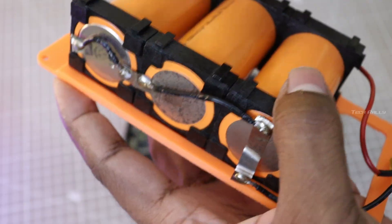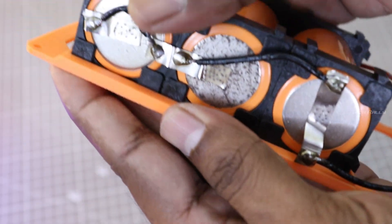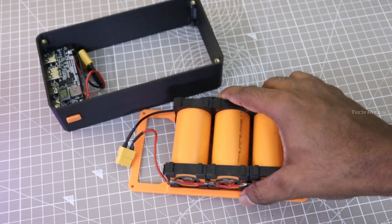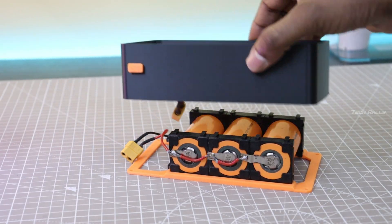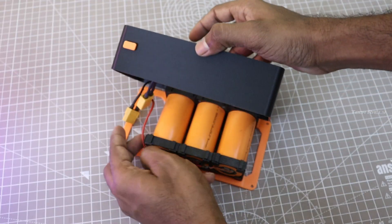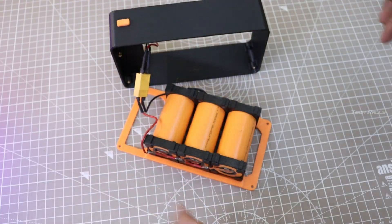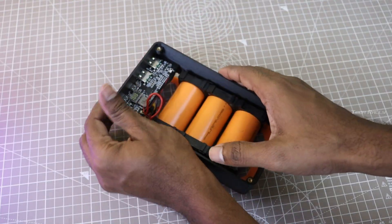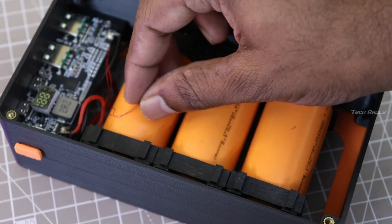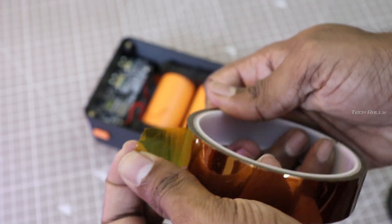Now let's put the battery into the bracket and connect it to the module. Now let's put tape on it to stick it to the battery.